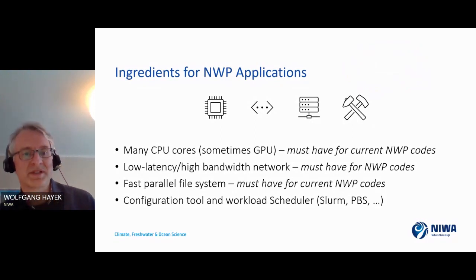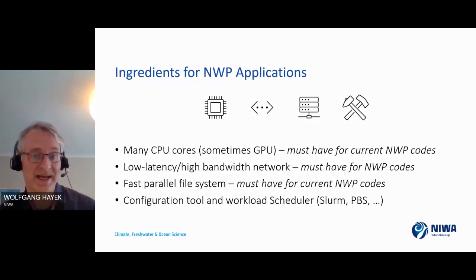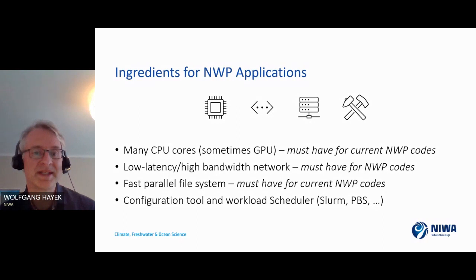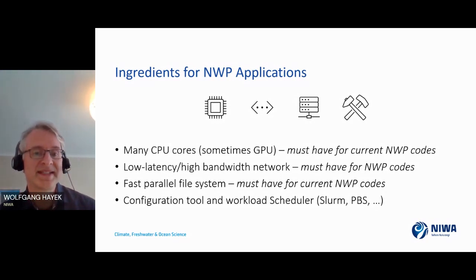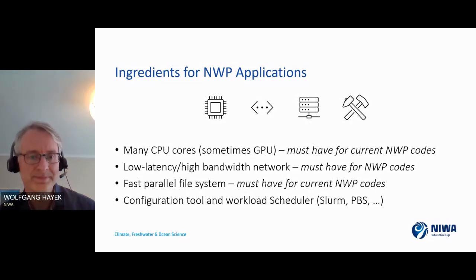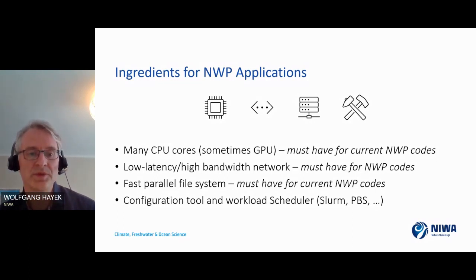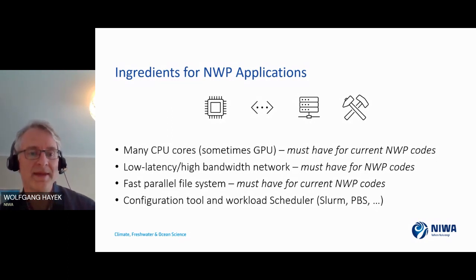What do we need for cloud HPC to run weather models? First, lots of CPU cores — weather forecasting is still mainly a CPU show; GPUs are coming but the Unified Model still heavily relies on CPUs. Very importantly, we need a low-latency, high-bandwidth network. The cloud hasn't had this for most of its roughly 20-year history — the offerings didn't include the fast communication needed to run a large MPI-based code like the Unified Model.